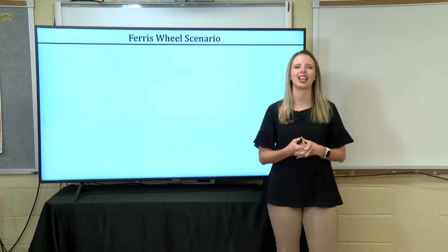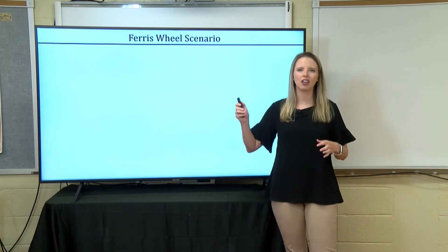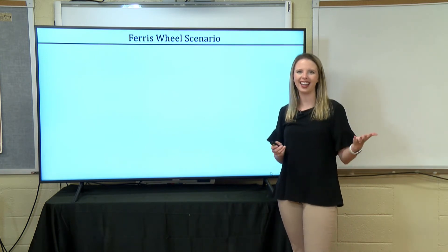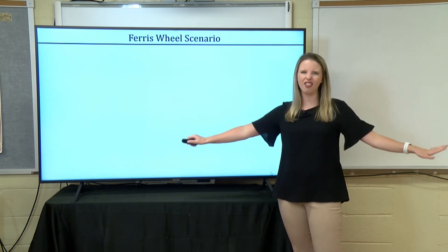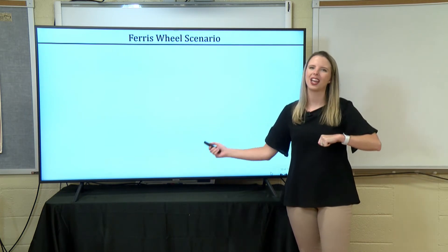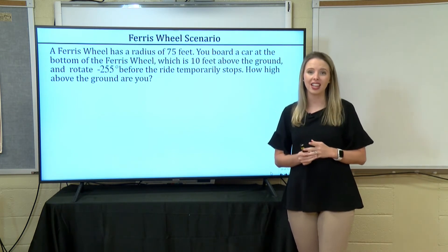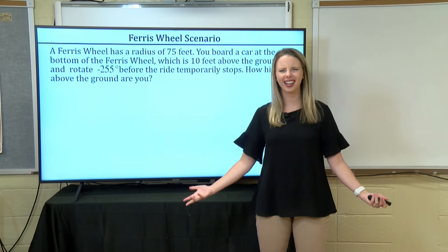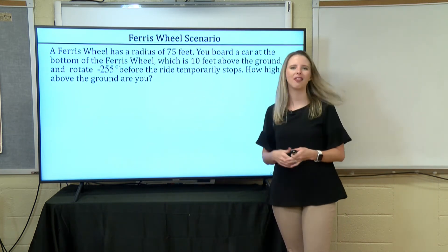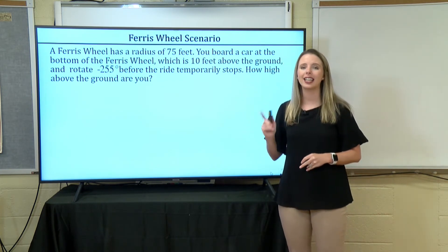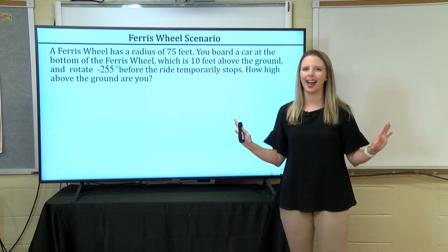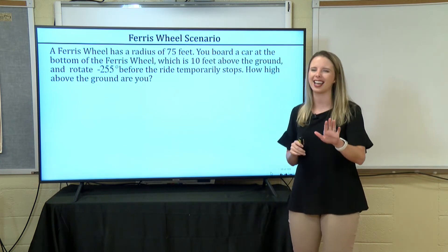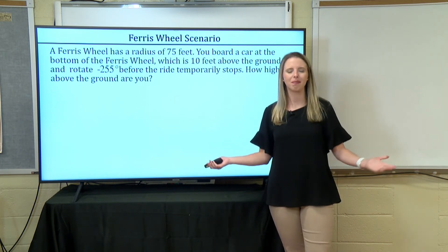Now let's see how all this ties together with the Greater Gulf State Fair. You have a ferris wheel with a radius of 75 feet and a platform that's 10 feet off the ground — because when you get on a ride at the fair, you walk up a platform. You're going to rotate negative 255 degrees before the ride temporarily stops. The question is: how high above the ground are you?